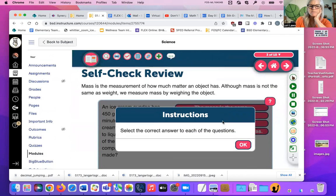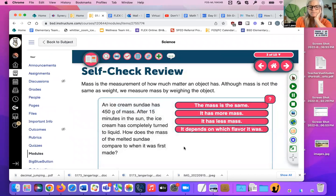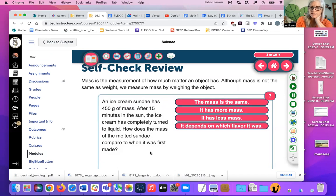Self-check review. Mass is the measurement of how much matter an object has. Although mass is not the same as weight, we measure mass by weighing the object. Ah, that's confusing, isn't it? An ice cream sundae has 450 grams of mass. After 15 minutes in the sun, the ice cream is completely turned to liquid. How does the mass of the melted sundae compare to when it was first made? Do you think it stays the same as more, as less? So same as like this, more, less. What do you think?